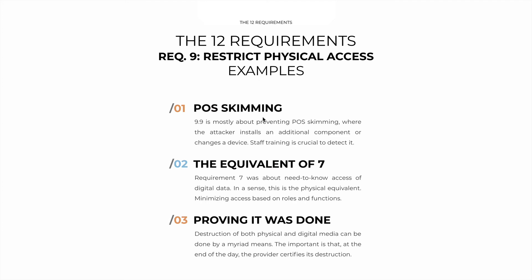POS skimming is the main focus of sub-requirement 9.9. We are trying to prevent the practice of skimming, where the attacker installs an additional component or actually changes the device. For example, on the card slot of a payment terminal, an attacker can install a fake card slot that couples on top of it. Once installed, the person can't even tell the difference — it's like a cover, but it captures data in real time, whether the magnetic track or the PIN, and can broadcast it in real time.